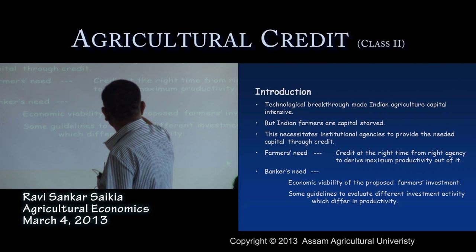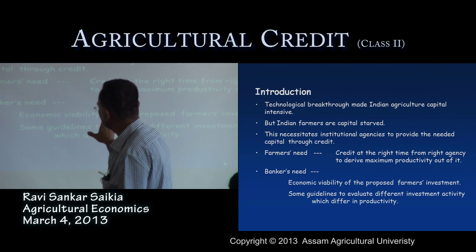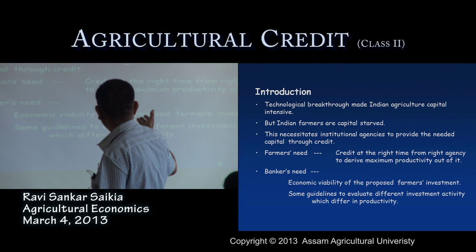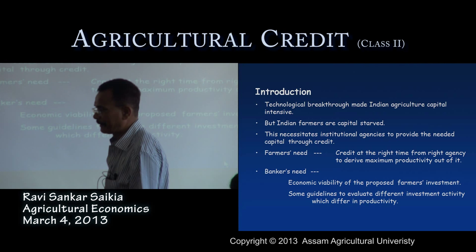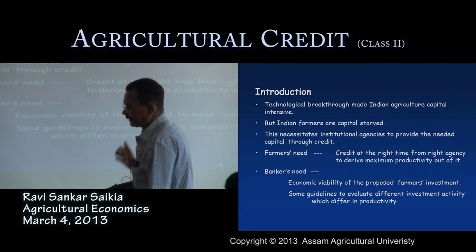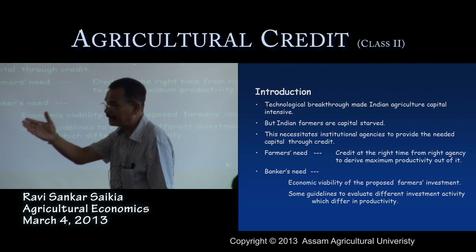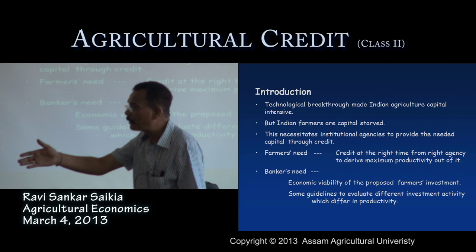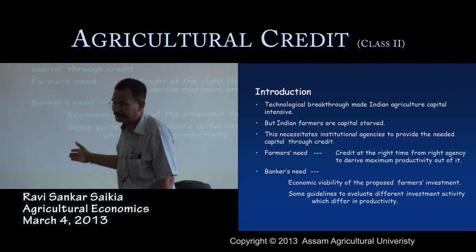It is necessary for institutional agencies to provide the needed capital through credit to the farmer. Farmers need credit at the right time from the right agency so that they can use the credit in a profitable way and increase productivity. Bankers, after the farmer takes a loan, generally look for the viability of the investment — that the farmer may get higher productivity leading to higher income.